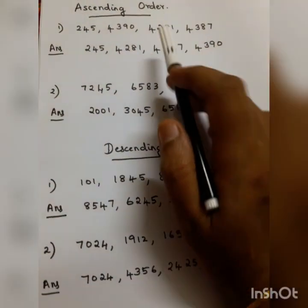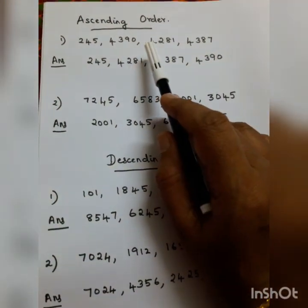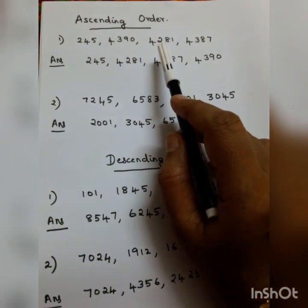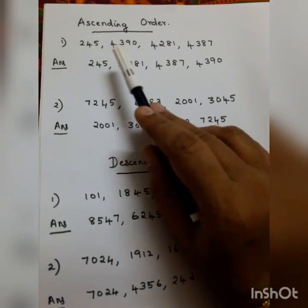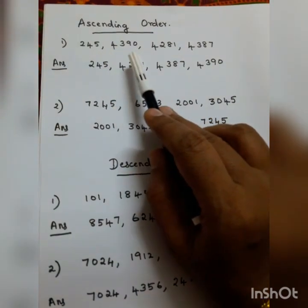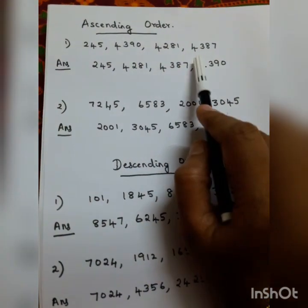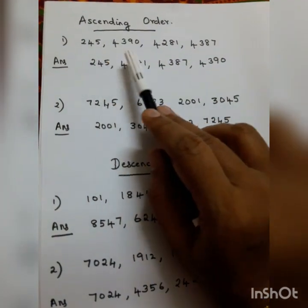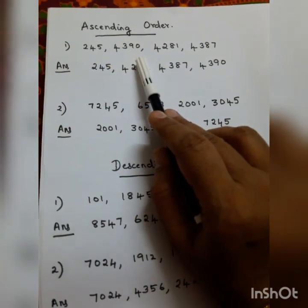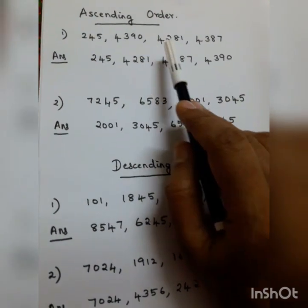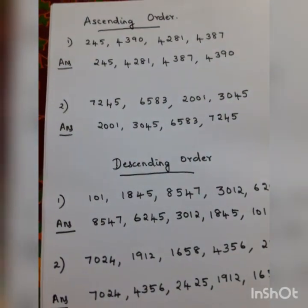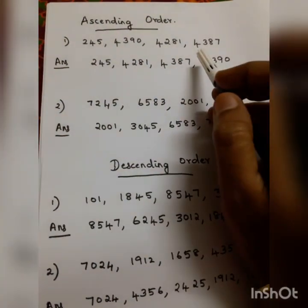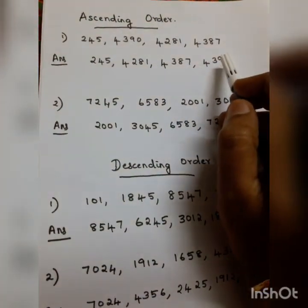Okay, now here we are going to study how to arrange the numbers in ascending order. The numbers are 245, 4,390, 4,281, and 4,387.